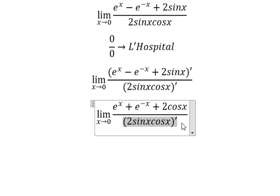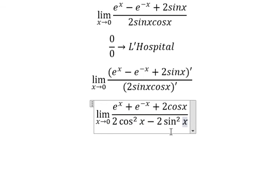We do first derivative of sin(x), then first derivative of cos(x). So we will get 2cos²(x) minus 2sin²(x).